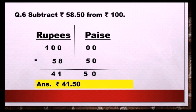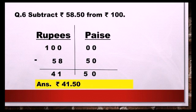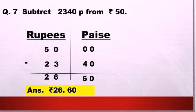Let us take another example: subtract rupees 58.50 from rupees 100. First, identify the minuend and subtrahend — 'from rupees 100' means 100 is the minuend. Make two columns, write 100 under rupees and 00 under paise on top, then write 58 under rupees and 50 under paise below. Subtract as normal. After subtraction, the answer is 41 rupees 50 paise, written in symbol as rupees 41.50.